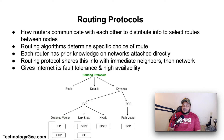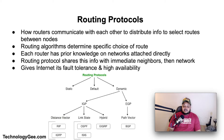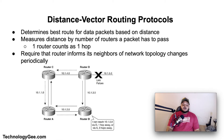Each router has prior knowledge only of networks attached to it directly. A routing protocol shares this information first amongst immediate neighbors and then throughout the entire network. This way routers gain knowledge of the topology of the network. The ability of routing protocols to dynamically adjust to changing conditions — such as disabled connections and components — and route data around obstructions is what gives the internet its fault tolerance and high availability.